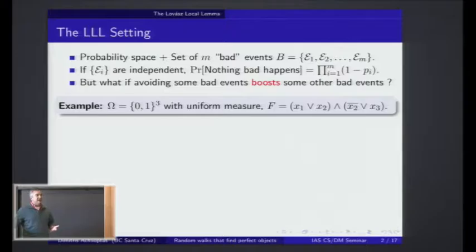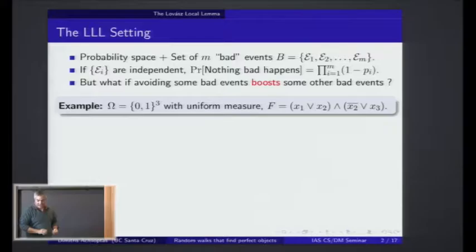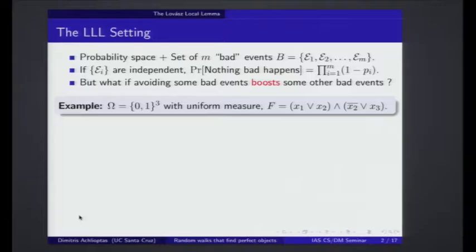As a very simple example, consider the case where you just have three binary variables and you consider the uniform measure on the cube. The events that we would like to avoid are the dissatisfaction of these clauses. If I tell you that the first clause is satisfied — so we have avoided the first bad event — well now it has become more likely that x2 is set to 1, which makes it less likely that the second clause will be satisfied. So we have increased the probability of that bad event. The nature of the interaction is captured by the fact that these two clauses want different things to happen to variable x2.